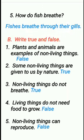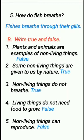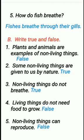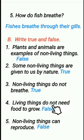Section B: true or false. First question — plants and animals are examples of non-living things. False. Second question — some non-living things are given to us by nature. True. Third question — non-living things do not breathe. True. Fourth one — living things do not need food to grow. False.